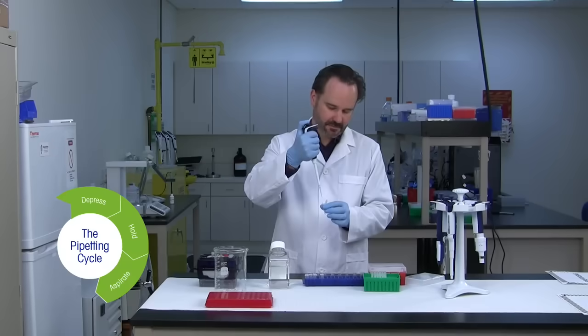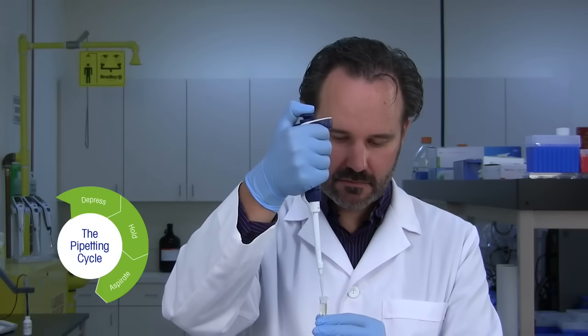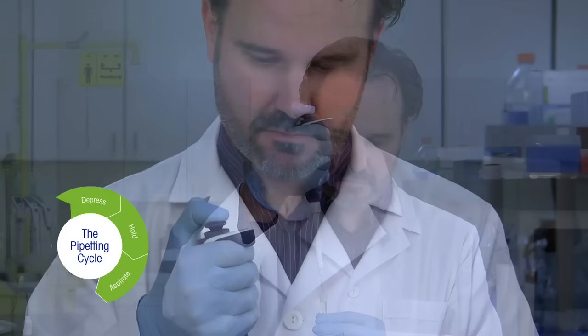Step 2. Immerse the pipet tip in the sample, then aspirate liquid into the tip by slowly releasing the plunger, allowing the plunger to return to its home position.